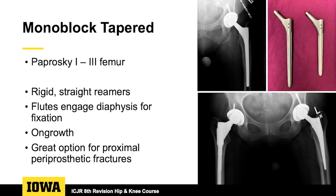The indication for monoblock tapered stems — you can almost use them in any revision. There are benefits involving the rigid straight reamers; you have flutes that will engage the diaphyseal bone. These stems almost always have an on-growth component, making them a great option for proximal periprosthetic fractures and a good option for the younger patient who might stress a modular junction over 30 or 40 years of wear.